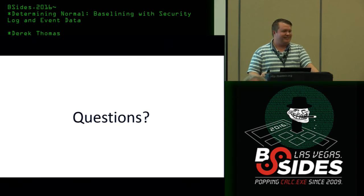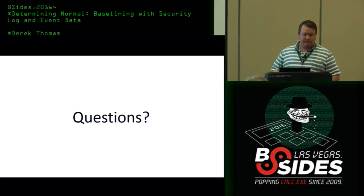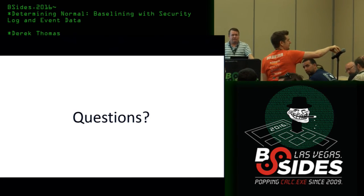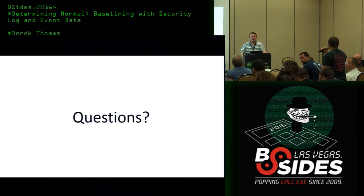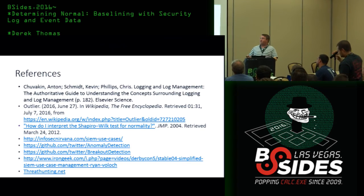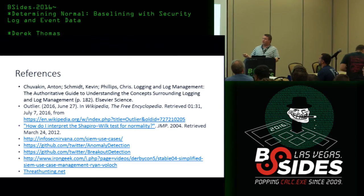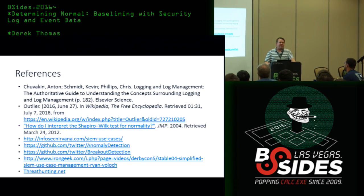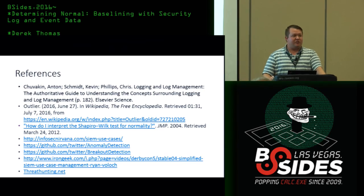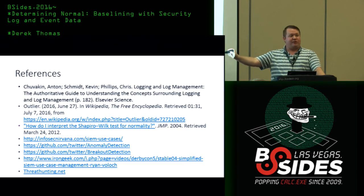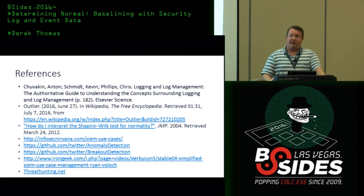Q&A: Someone asks what if the data is not normally distributed — what if it's a fat tail or something like that? That's exactly where this method won't work, and you have to look at other methods like the anomaly detection package. For example, during this investigation I looked at account lockouts, and in many organizations account lockouts won't happen at all — your most frequent event is zero and you only see a tail going up. That's not a normally distributed data set, so you'd have to look at it differently — possibly only having an upper limit. It's something I haven't explored yet but will definitely look into.